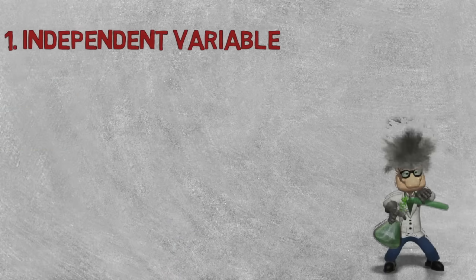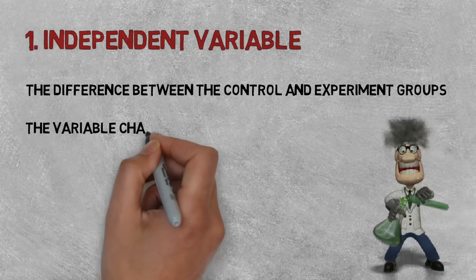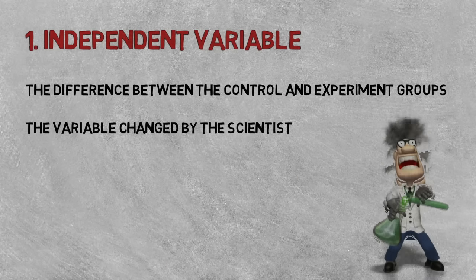The independent variable is the difference between the control and experimental groups of an experiment. The independent variable is the variable changed by the scientists to test the experiments hypothesis.